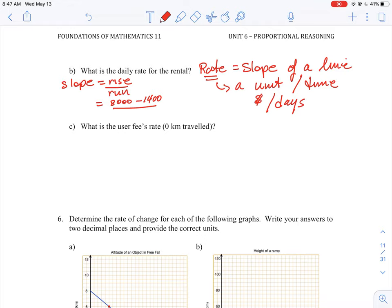That will give us the rise in the graph in terms of dollars. And then the run is 13 days, which goes with $3,000, minus 5 days, which goes with $1,400.